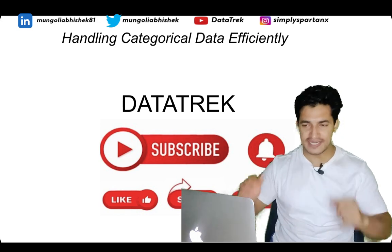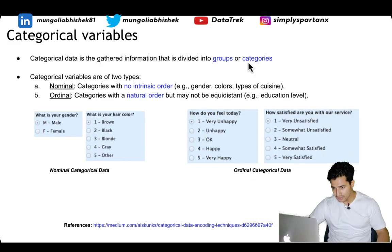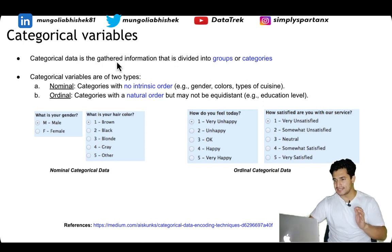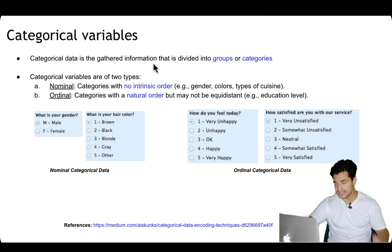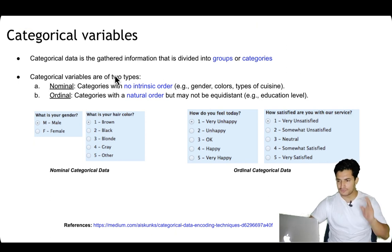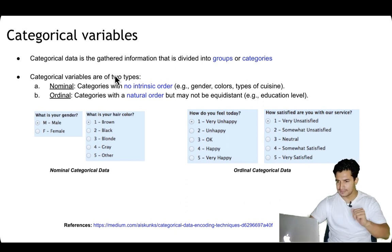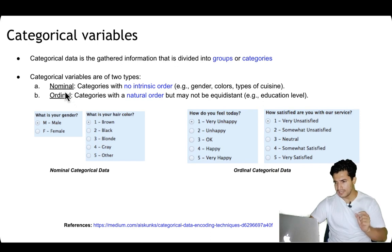So let's get started. What is categorical data? Categorical data is data gathered as information that can be divided into groups or categories, as the name suggests. A categorical variable can be of two types: nominal and ordinal.